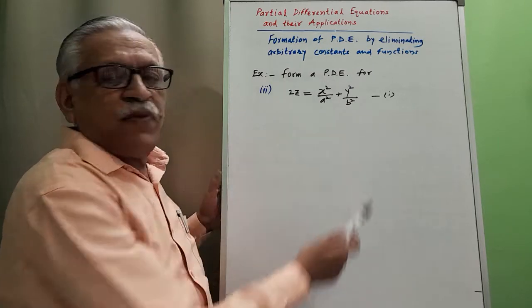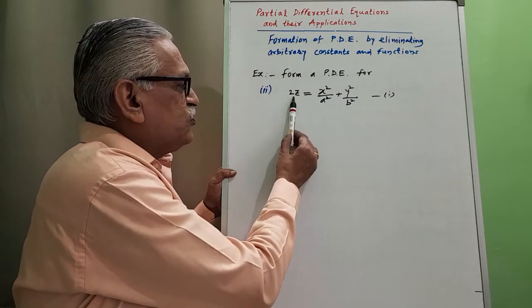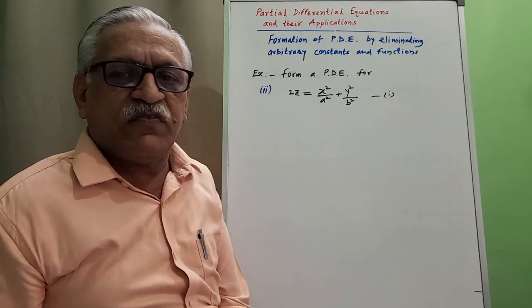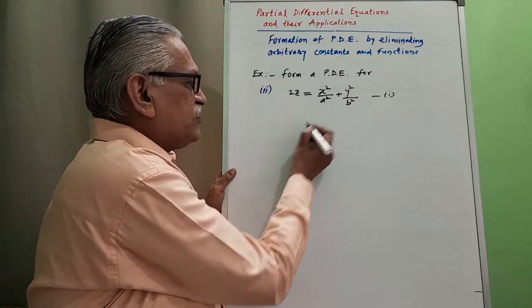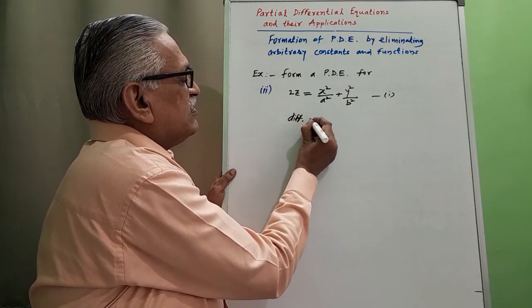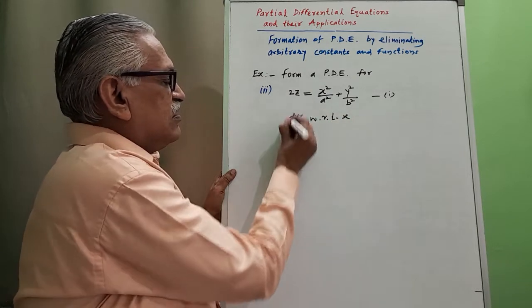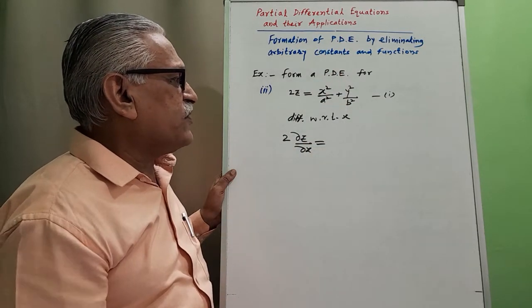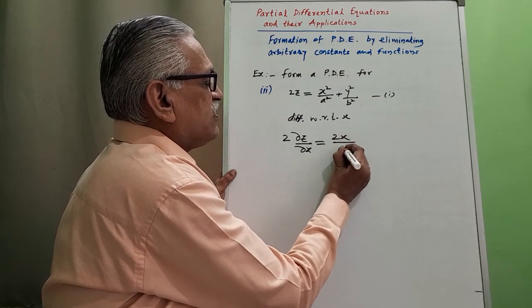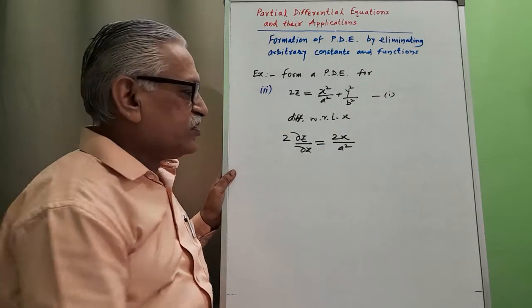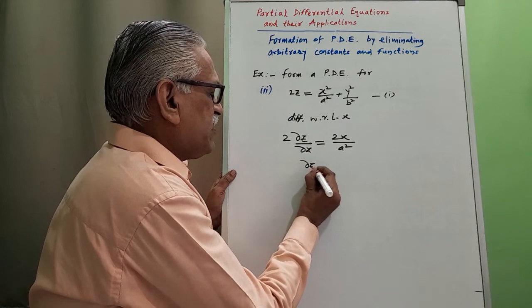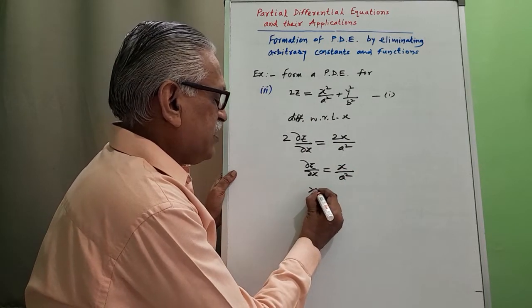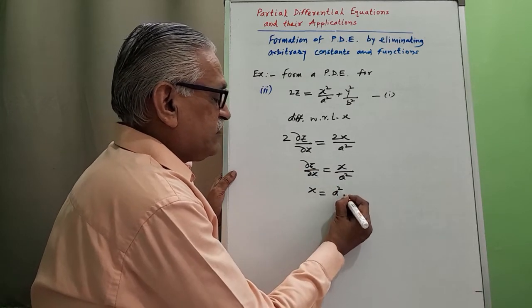One more example: form a partial differential equation for 2z equals x²/a² plus y²/b², where z is a function of two independent variables x and y, and a and b are arbitrary constants. Differentiating with respect to x, keeping y constant: 2·(dou z by dou x) equals 2x/a², so the 2s cancel and we get x/a² equals dou z by dou x, which gives a² equals x/p, or x equals a²·p.